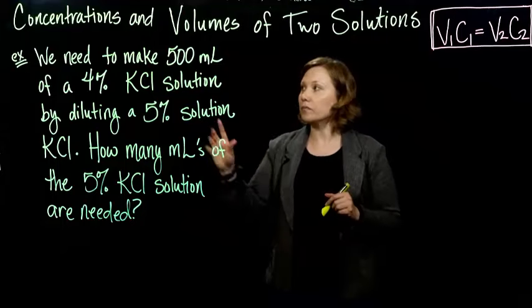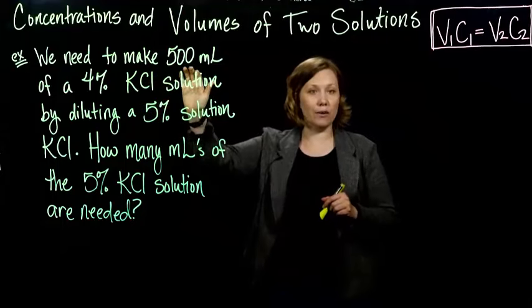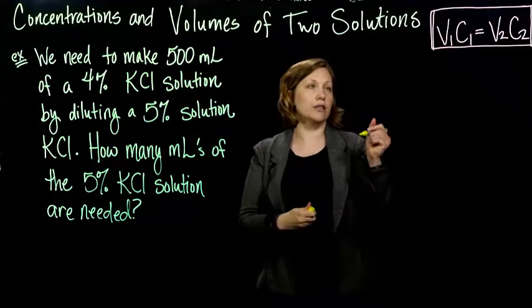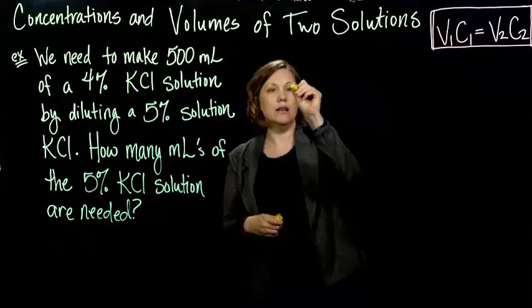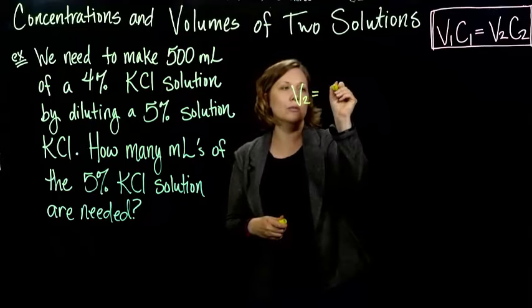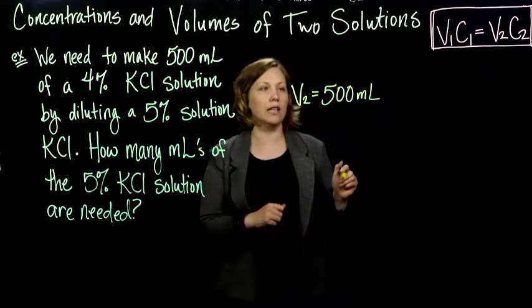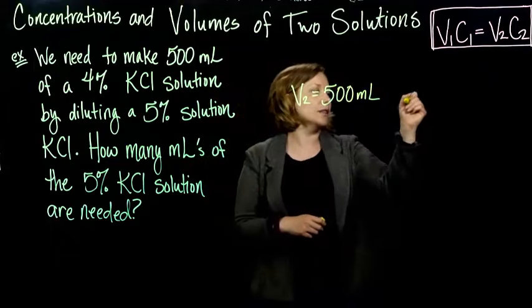So if we look, we need to make 500 milliliters. So we want to end up with 500 milliliters. So what that tells me is my second volume needs to be 500 milliliters. So the volume after I've diluted it needs to be 500 milliliters.